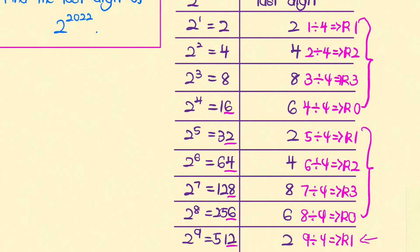And similarly, if the exponent upon division by 4 has a remainder of 2, then the last digit of 2 to the power of the number is actually 4. And for other numbers it follows a similar logic.